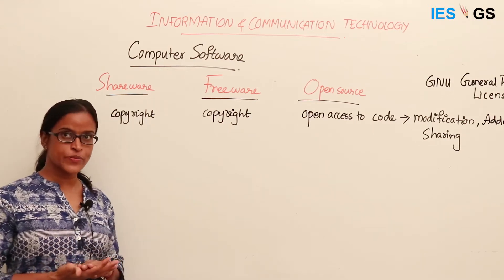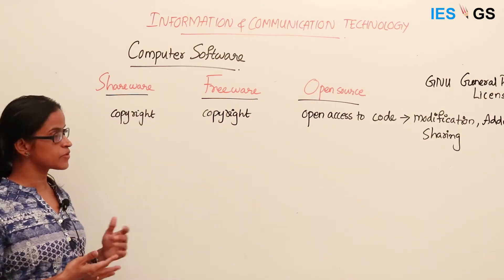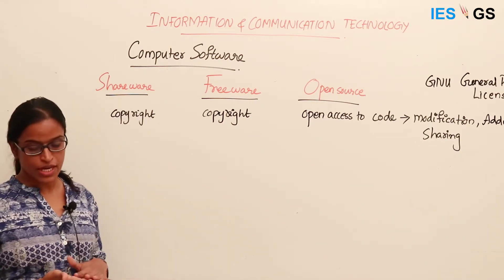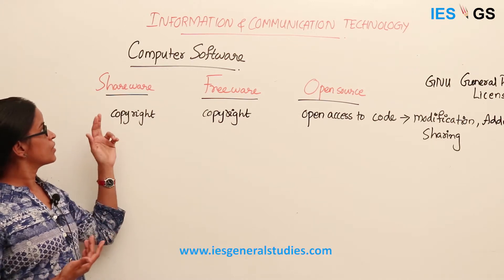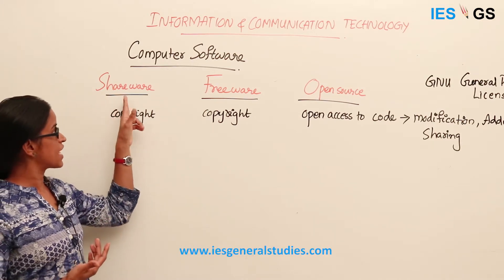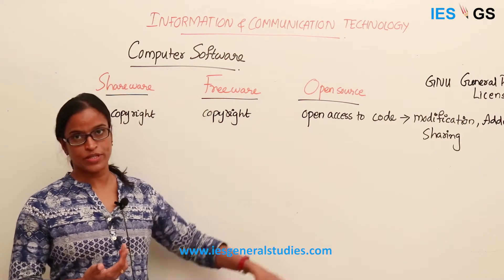Depending on the ownership of software, there are different types of software. The first types are shareware, freeware, and open source.